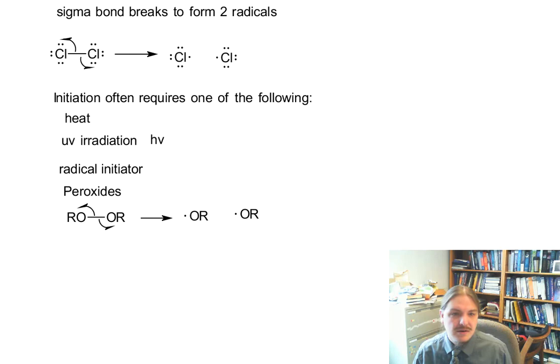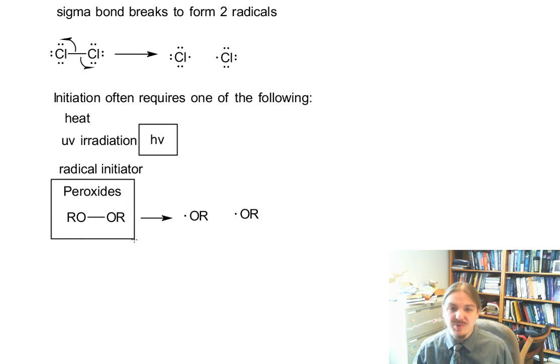If you see H nu or you see a peroxide around, hanging out over or under a reaction arrow, that's a pretty good clue that you're going to be doing a radical reaction with a radical mechanism.